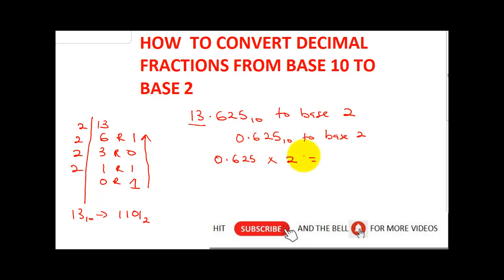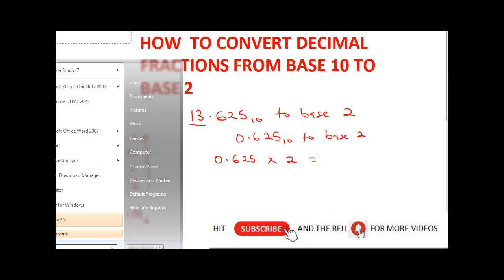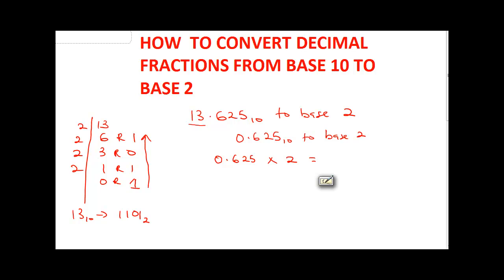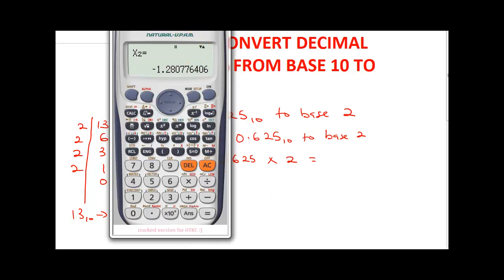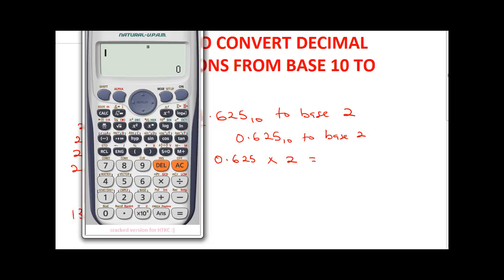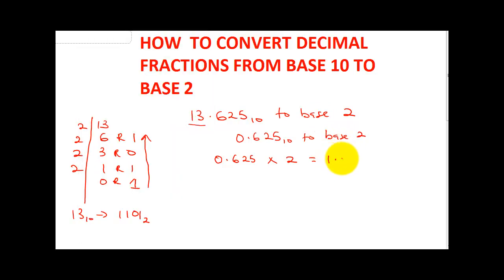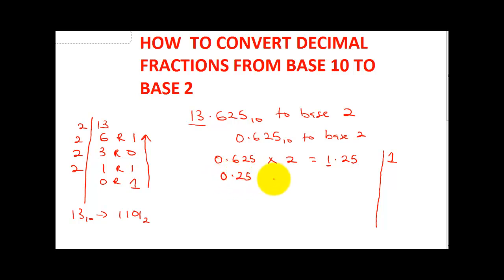I'm going to bring in my calculator. 0.625 multiplied by 2 gives me 1.25. What I'm going to do in this case is take the 1, and then the 0.25 — I'll repeat the process again.